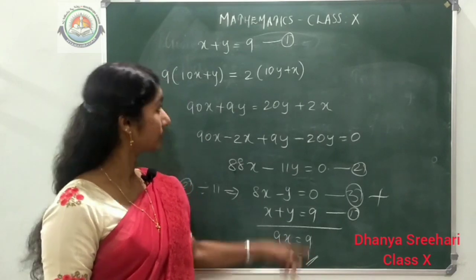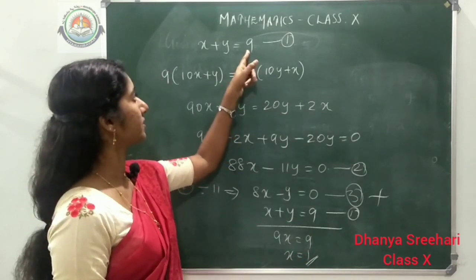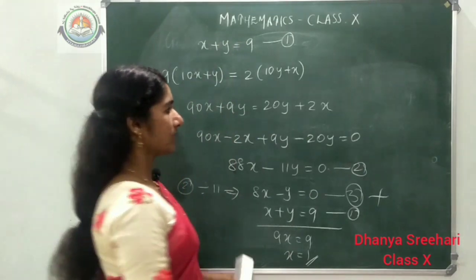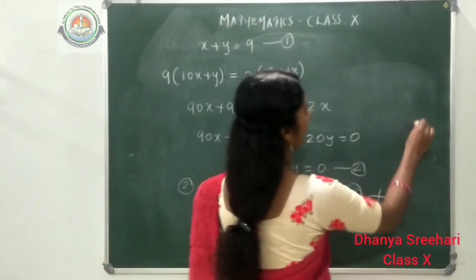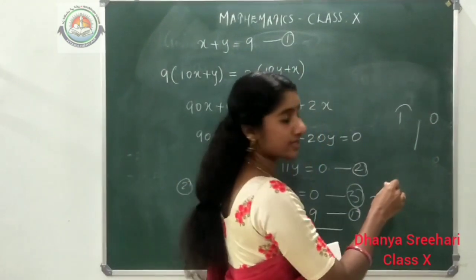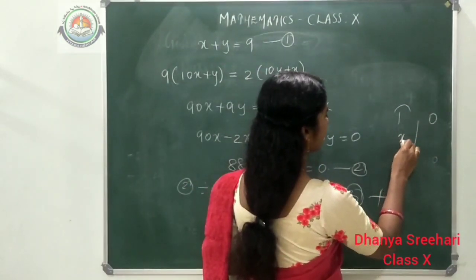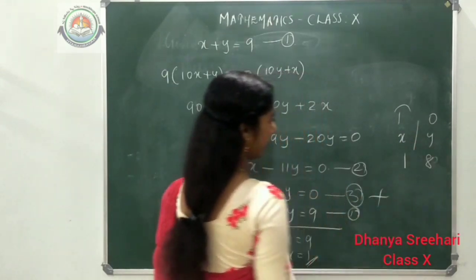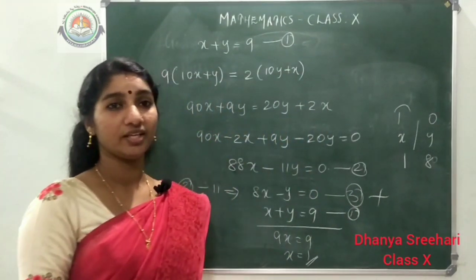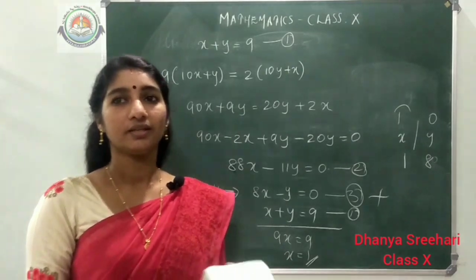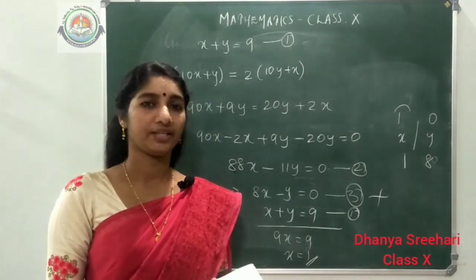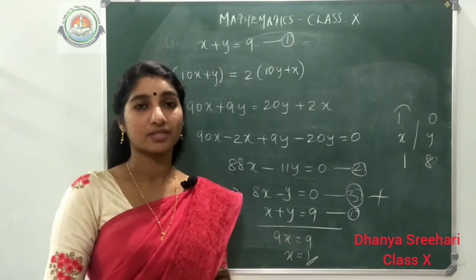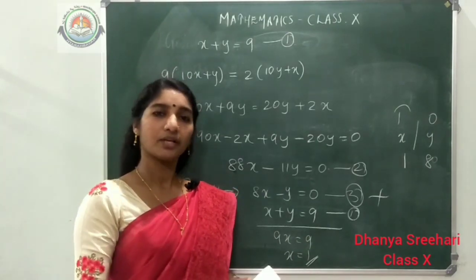Substituting x equals 1 into the first equation: 1 plus y equals 9, so y equals 8. We have x equals 1 in the tens place and y equals 8 in the units place, so the number is 18. Today's work is to complete exercise 3.4.